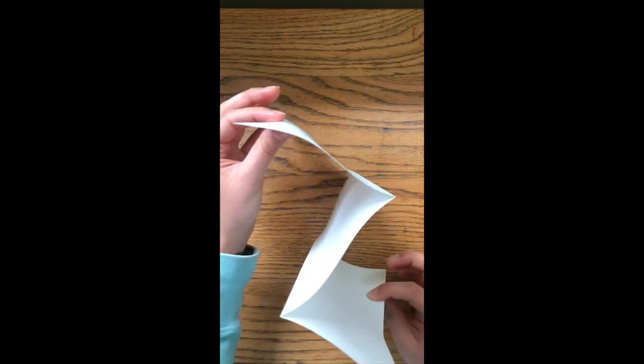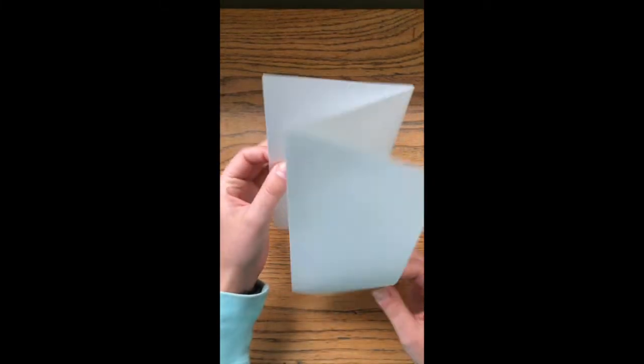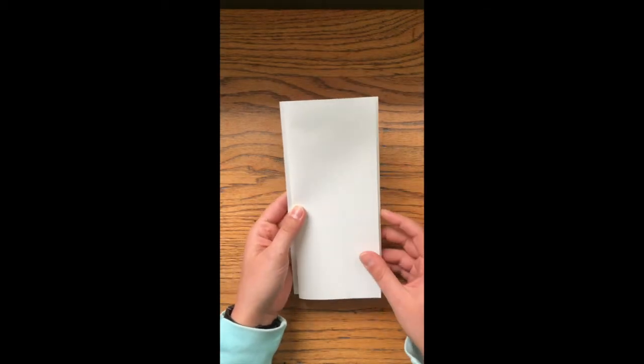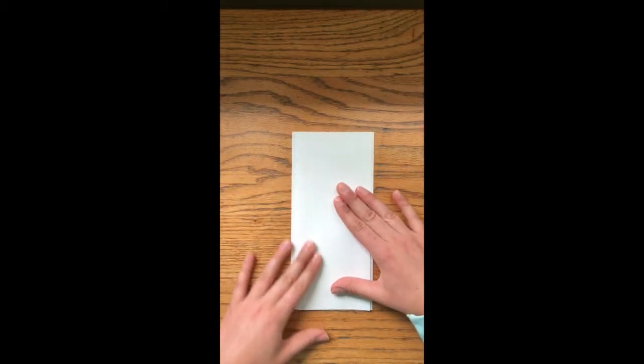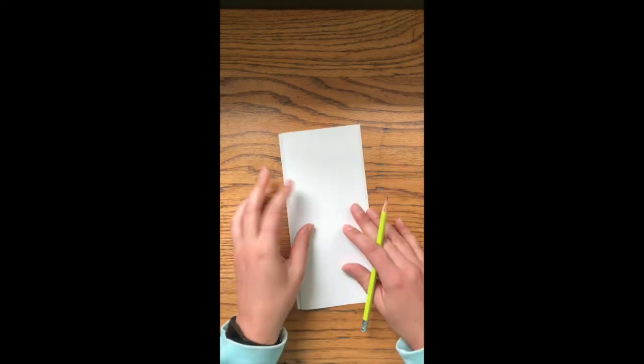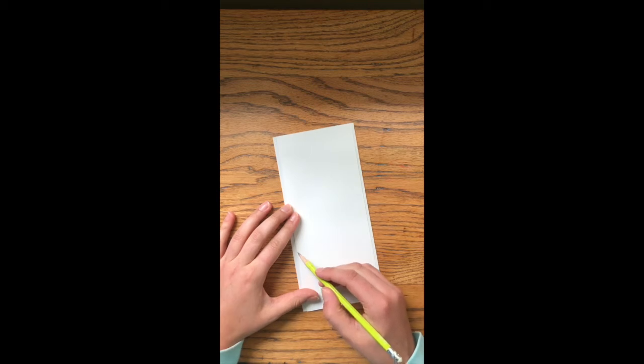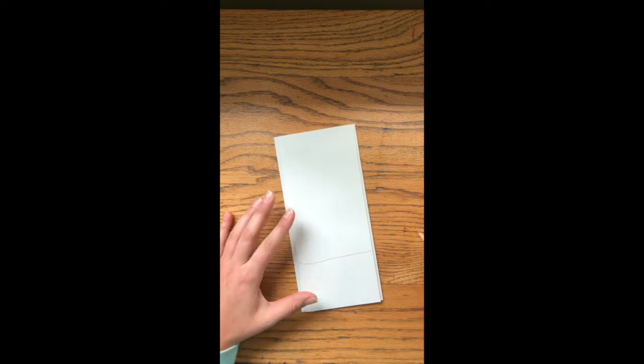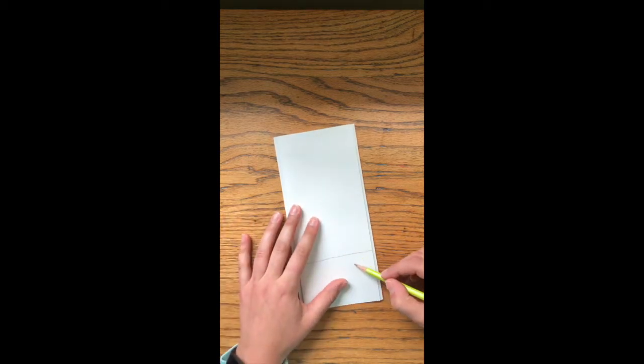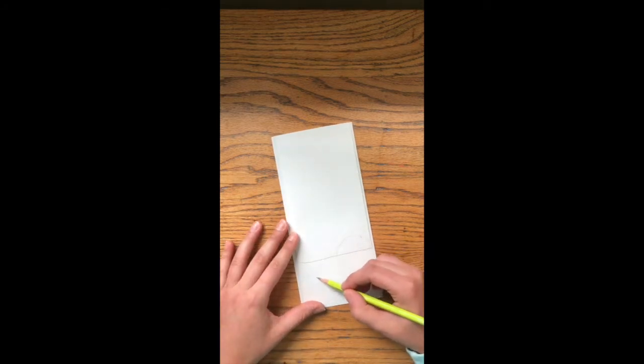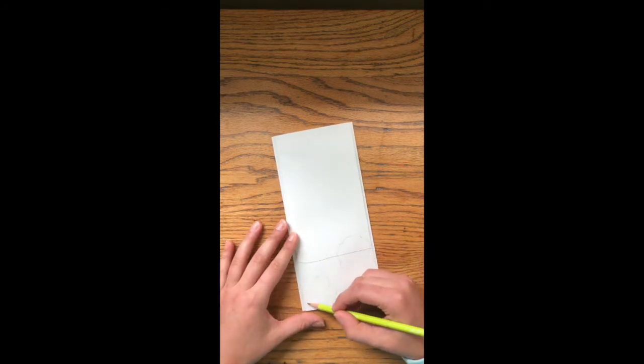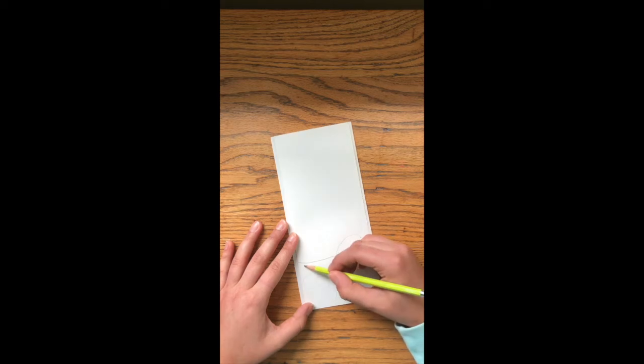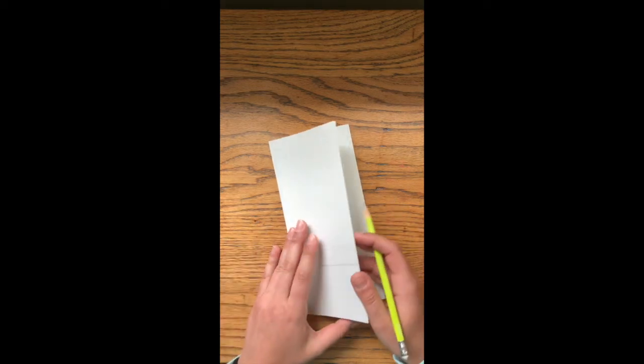Once you're done it should look something like this, kind of like a letter Z. Next you want to think about what you want to put in your landscape. I'm looking right out my window when I'm drawing this, so the first thing I see in front of me is the grass and some bushes. So I put down my horizon, which is that straight line I just drew, shows where the ground meets the sky, and then I'm putting some bushes in to fill up the space.